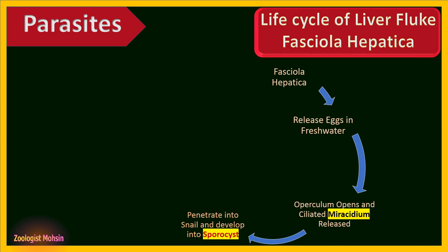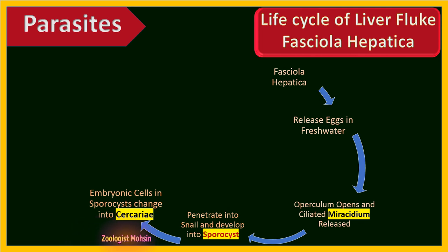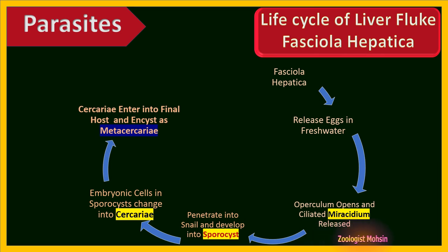The sporocysts undergo asexual reproduction and produce hundreds of daughter sporocysts called rediae. These rediae have hundreds of embryonic cells which, upon further division, produce hundreds of cercariae — a phenomenon termed polyembryony. Among these hundreds, only one or two proceed further in the cycle. Cercariae larvae have a digestive tract, sucker, and tail for movement.